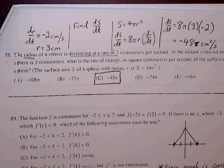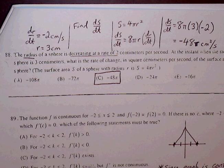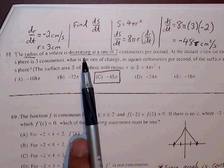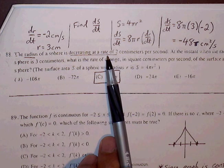Okay, these are the last set of problems from the 2008 exam calculator portion, 88 to 92. So 88, we have a radius of a sphere decreasing at a rate of 2 centimeters per second.